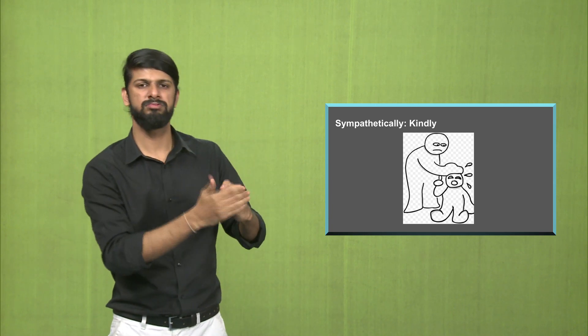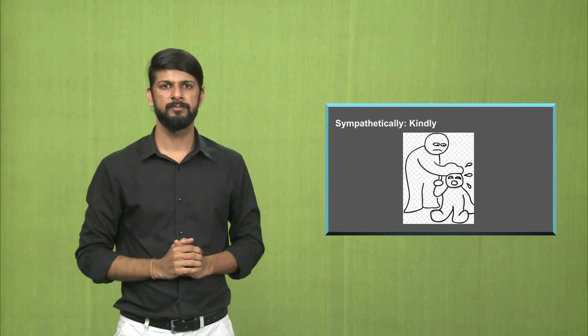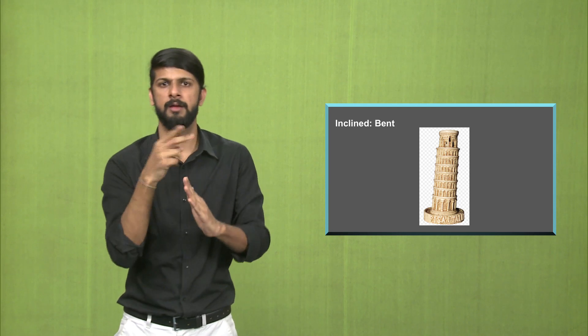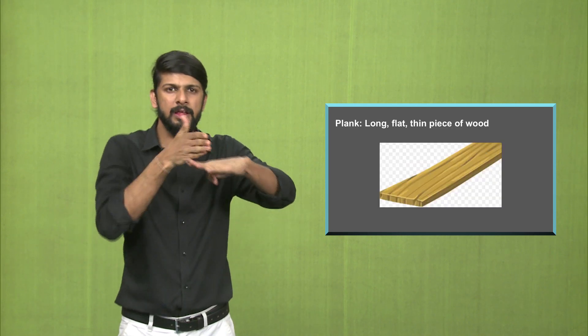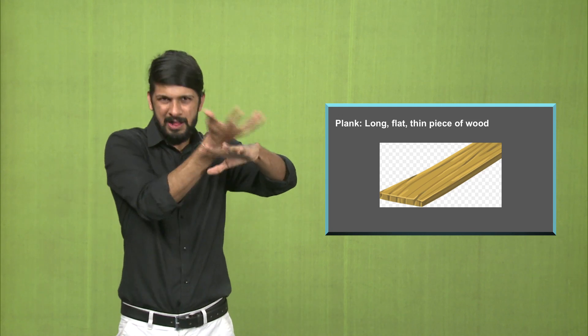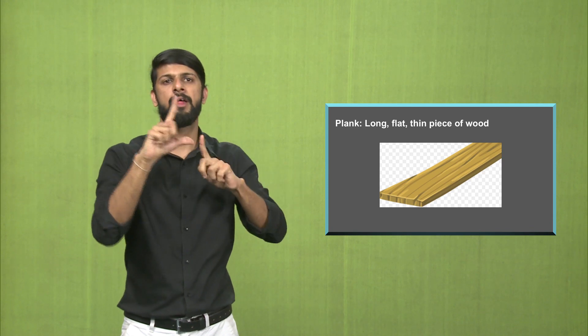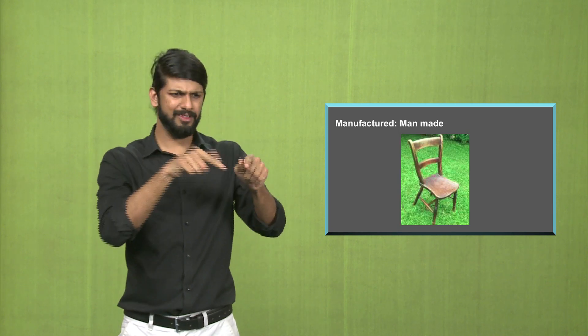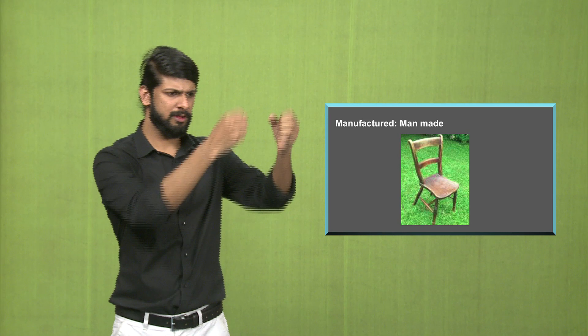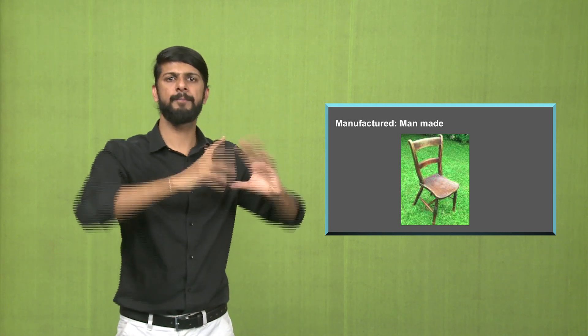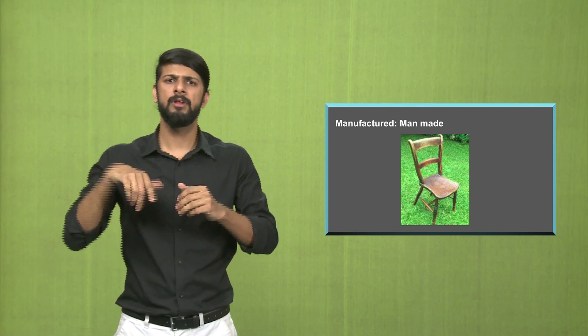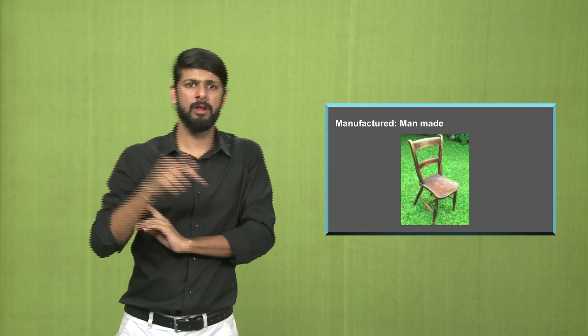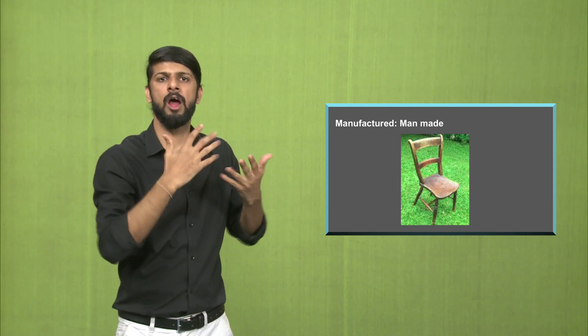Sympathetically is to feel sympathy or feel a kind of kindness for the other person. Inclined is bent. Plank is a long, flat, thin piece of wood. You saw in the painting, the plate of fruits was placed on a plank. Manufactured, it is man-made. For example, fruits, vegetables, are they man-made? No, they are natural. But there are things which are man-made.